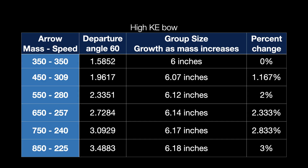But what about a high kinetic energy bow? I did the same analysis — 350-grain arrow, found my zero, adjusted to hit three inches high and three inches low, calculated the angle spread, then applied that angle spread to heavier arrows going slower. Going from 350 to 450 grains, the arrow travels at 309 feet per second and you go from a six-inch group to a 6.07-inch group. At 550 grains, that's 6.12 inches — an eighth of an inch bigger group. At 650 grains, 6.14 inches — that's 300 grains more and you lose just 0.14 inches of tolerance.